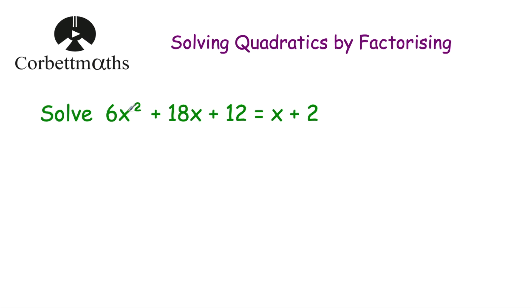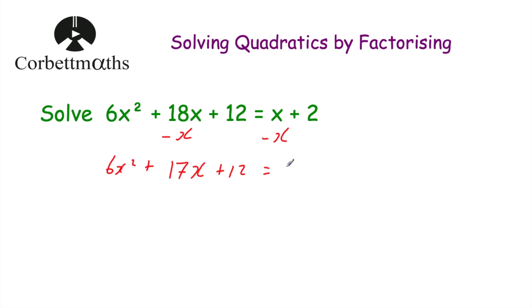Our last question: solve 6x² + 18x + 12 = x + 2. This time the equation doesn't equal 0, so we need to make one side equal 0. When choosing which side to set to 0, I look at the x² term — I want it to be positive for easier factorization. The x² term is positive on the left-hand side, so I'll keep it there. Taking x away from both sides gives 6x² + 17x + 12 = 2. Then taking 2 away from both sides gives 6x² + 17x + 10 = 0.